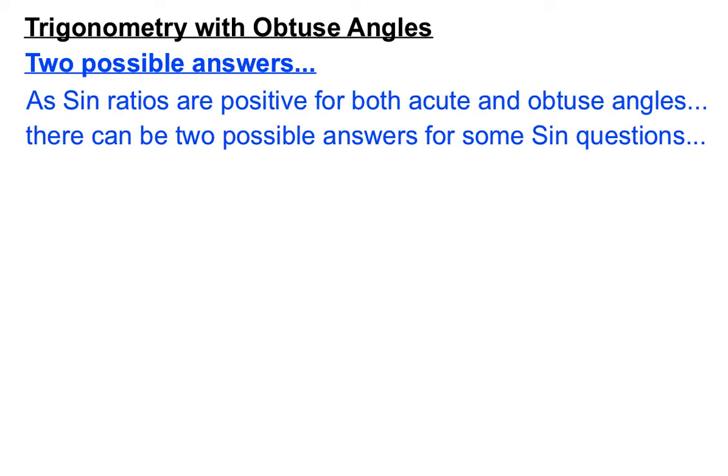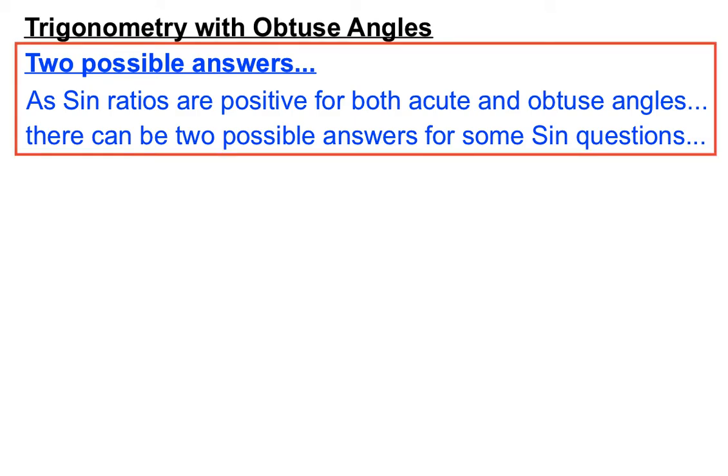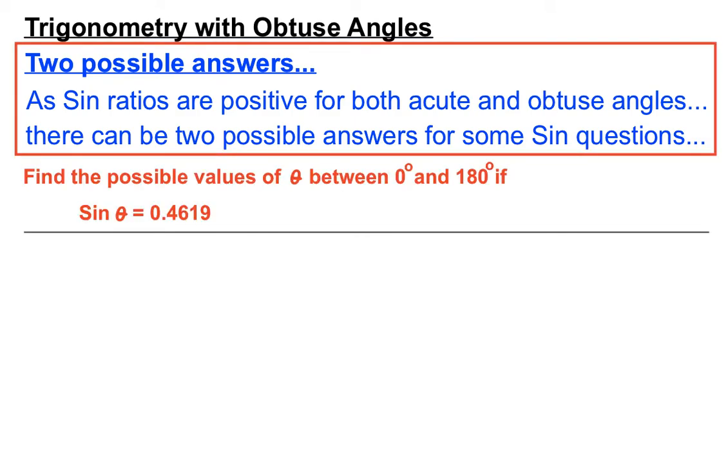Now, a quirky thing happens with sine ratios because you notice earlier in the video that we said that sine was positive in the acute section, which all of the ratios are positive in that section. But sine was the only one of the three ratios that was positive from obtuse angles as well. So in some questions we actually get two possible answers, especially sine questions here. Here's an interesting question. Find the possible values of theta between 0 and 180 degrees. So that takes into account acute angles and obtuse angles, so we'll have to keep that in mind.